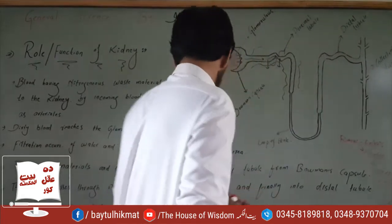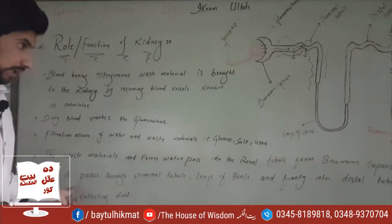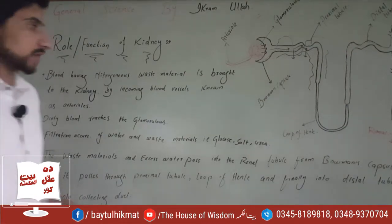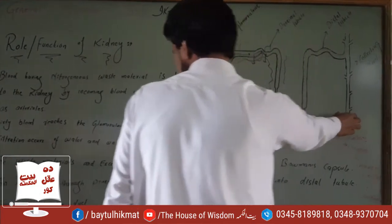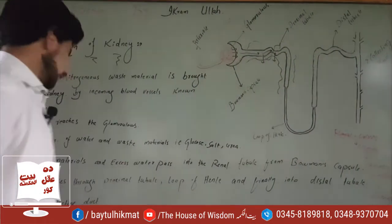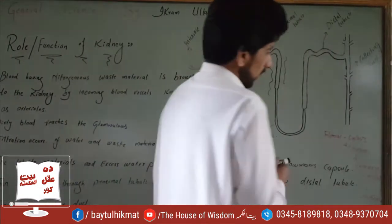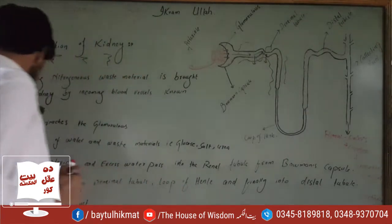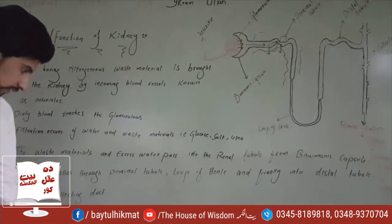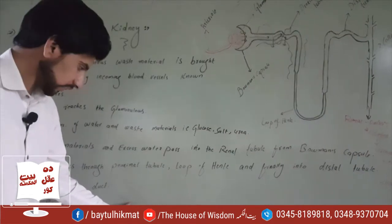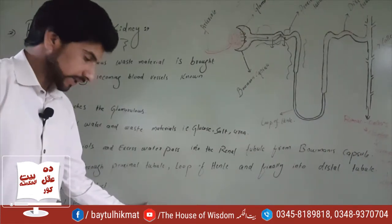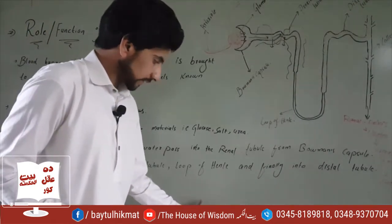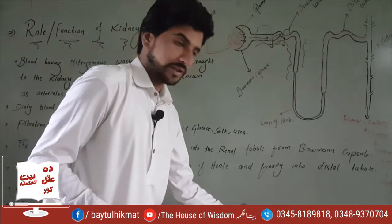Urine is formed and passes into the collecting duct. From the collecting duct it passes to the renal pelvis, then via the ureter to the urinary bladder. The urinary bladder stores the urine temporarily, then via the urethra the waste product is expelled out of the body.